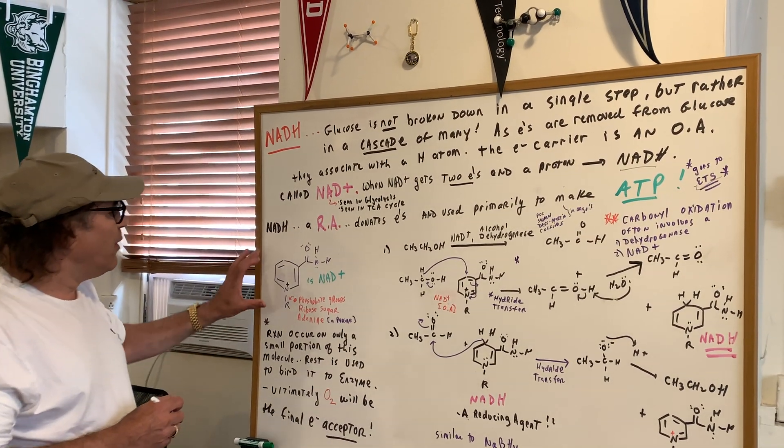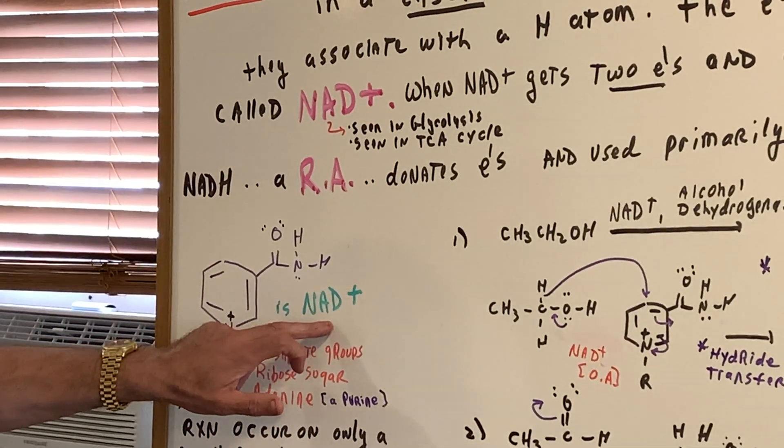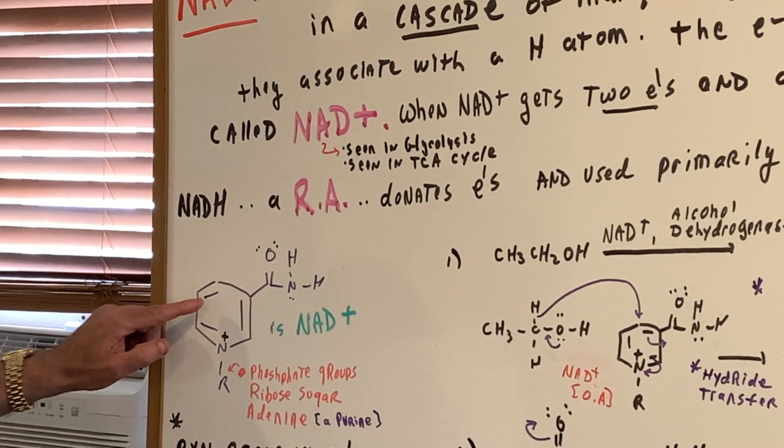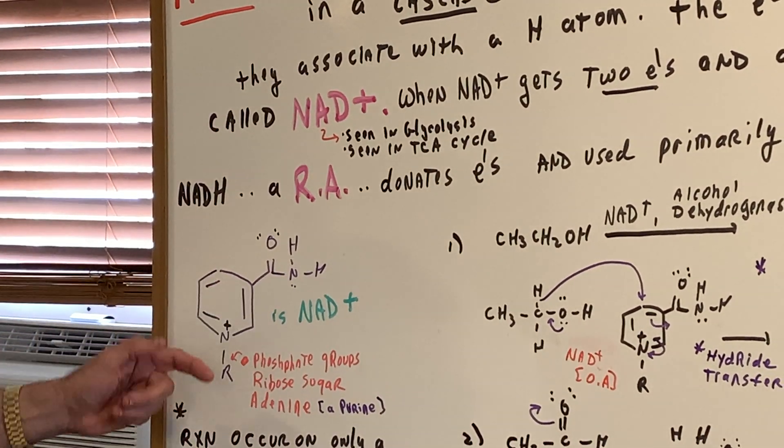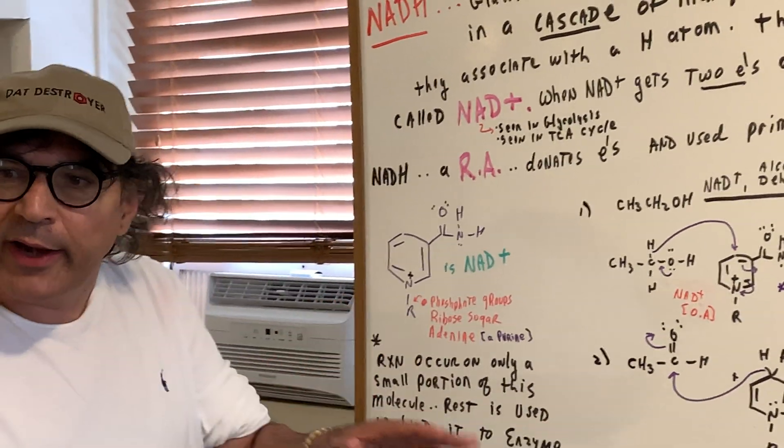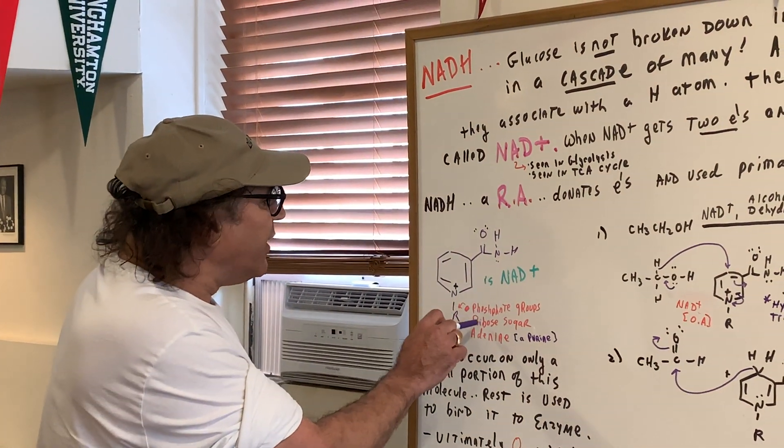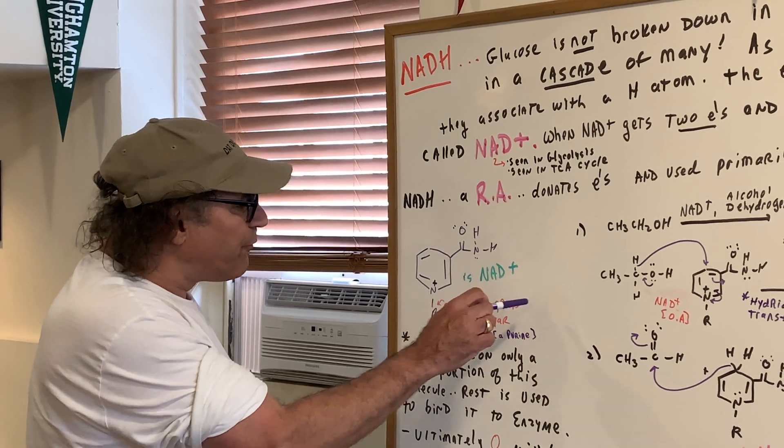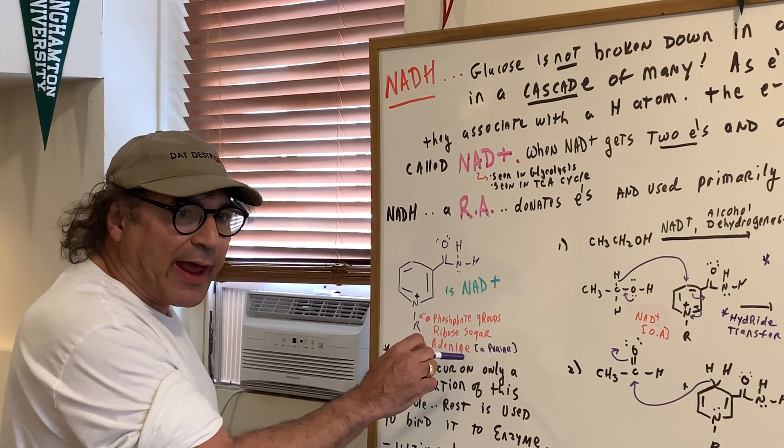Now, I want you to just look on the blackboard. This is the way we normally draw the structure of NAD+ in biochemistry. Notice it's got a pyridine ring, and it's got an amide. Now, I wrote the word R here. I don't think you want to see what's beyond that. It's a gigantic molecule, and it contains ribosugar, phosphate, phosphate groups, and the purine adenine.